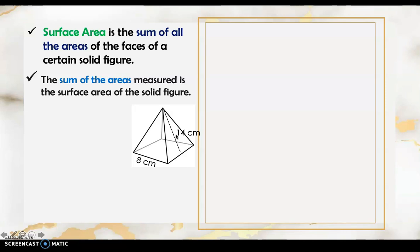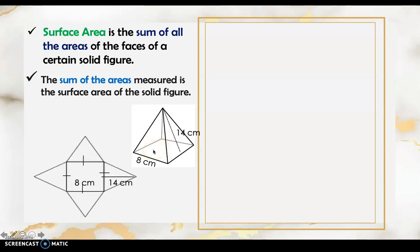To find the surface area of this figure, we need to get the area of each shape. It is easier to visualize if we make a net of the square pyramid like this. The 14 centimeters is the height of the triangle, which is the slant height of the pyramid.